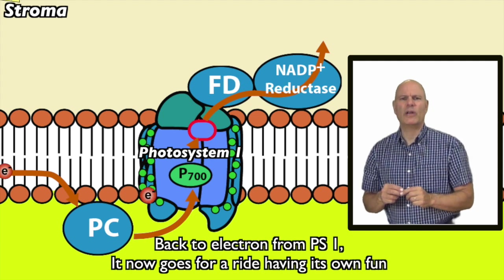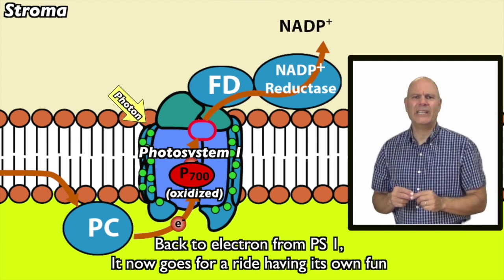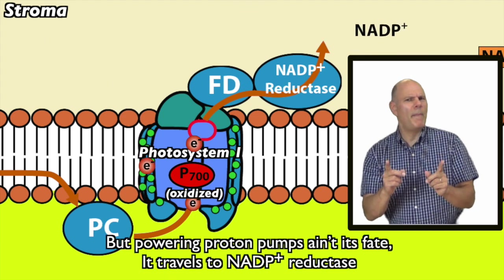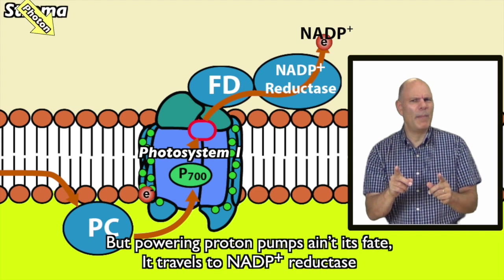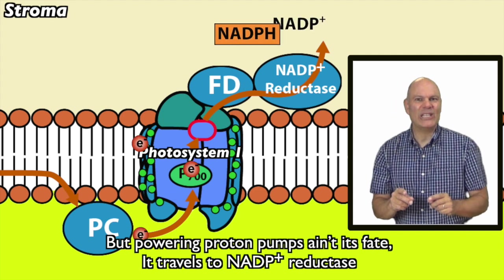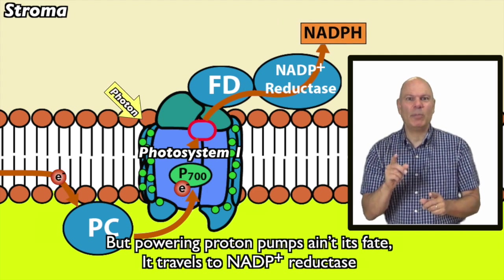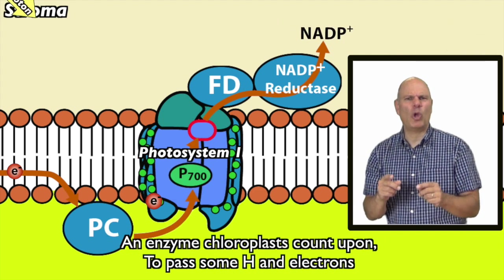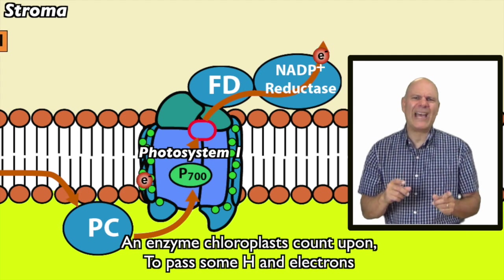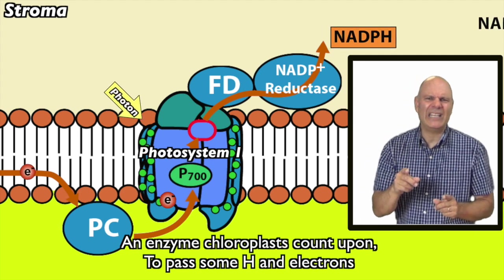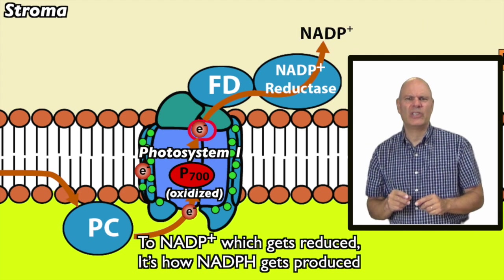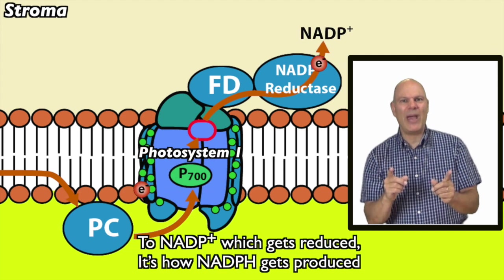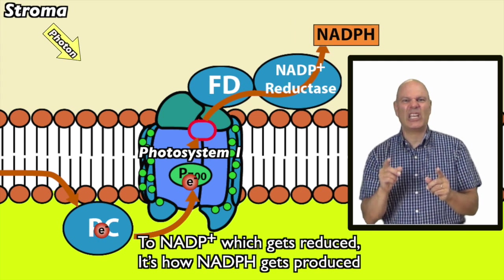Back to the electron from PS1 — it now goes for a ride having its own fun. But powering proton pumps ain't its fate. It travels to NADP+ reductase, an enzyme chloroplasts count upon, to pass some H and electrons to NADP+, which gets reduced. It's how NADPH gets produced.